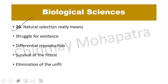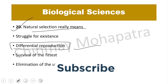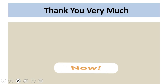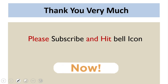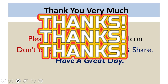Question number 20. Natural selection really means? The right answer is differential reproduction. So these are 20 most important questions on evolution. Thank you for watching. Hope this will help you. If new, subscribe and hit the bell icon. Like, comment, share. Have a great day. Keep learning.